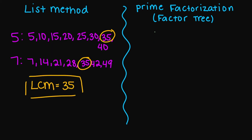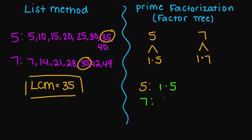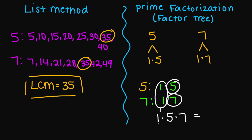So let's try the prime factorization. So we have one times five — cannot factor any further. And then my seven, we have one times seven — cannot factor any further. So my five is one times five, and my seven is one times seven. The only number I can pair up is the one. Then all the other numbers are add-ons. So one times five times seven: one times five gives us five, five times seven gives us 35.